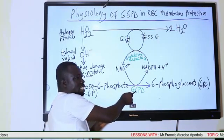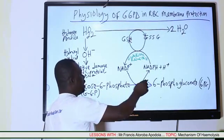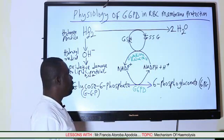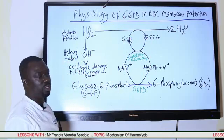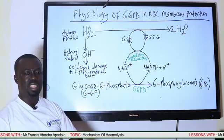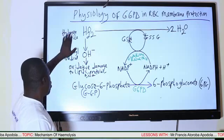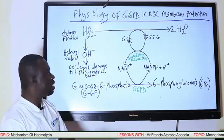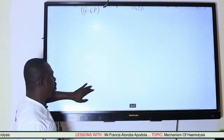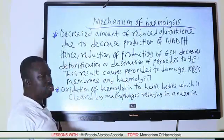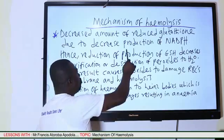Once this enzyme is deficient, there is going to be a decreased production of NADPH. Decreased NADPH production means there is going to be a decreased conversion of oxidized glutathione to reduced glutathione. That means we are going to have decreased levels of reduced glutathione to exert antioxidant properties or to destroy oxidants or free radicals. The net result is that these free radicals or oxidants will cause damage to the cells. So the mechanism by which GCSPD deficiency results in hemolysis is the decrease or reduction of reduced glutathione.